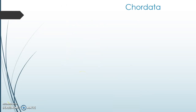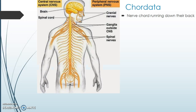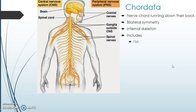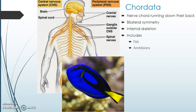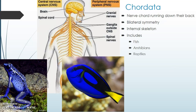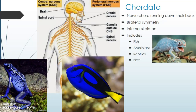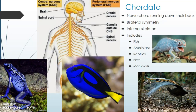On to the last group — this is traditionally thought of as the vertebrates, but in fact it should be called Chordata. If you're a chordate you have a nerve chord running down your back — you can see the nerve chord running down the back there. These guys are all bilaterally symmetrical, which means they can only be cut in half in one direction. They have internal skeletons. They include fish, amphibians, reptiles, birds, and mammals.